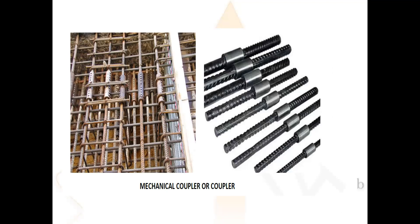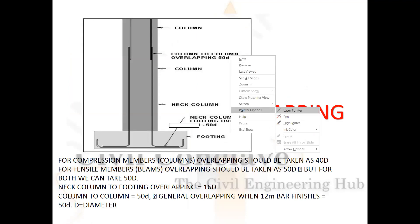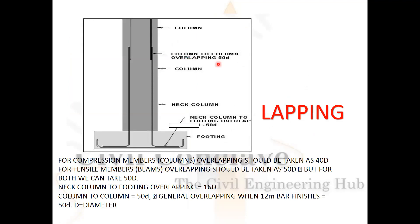It is totally dependent upon your project and budget. For lapping: column lap = 50d. For compression members, overlapping should be taken as 40d, but for tensile members such as beams, overlap is taken as 50d.